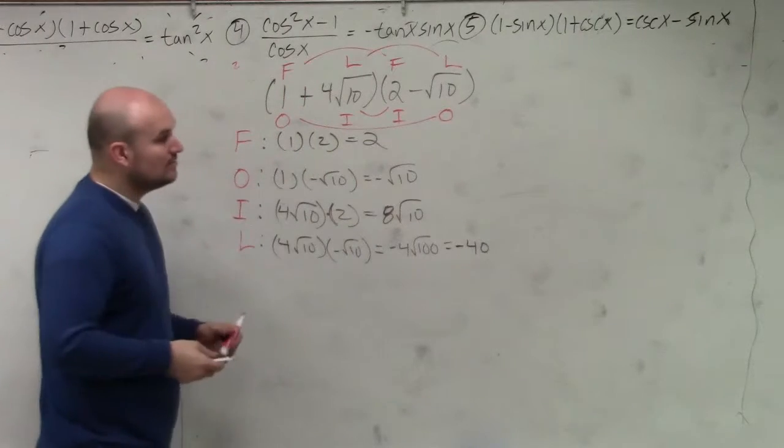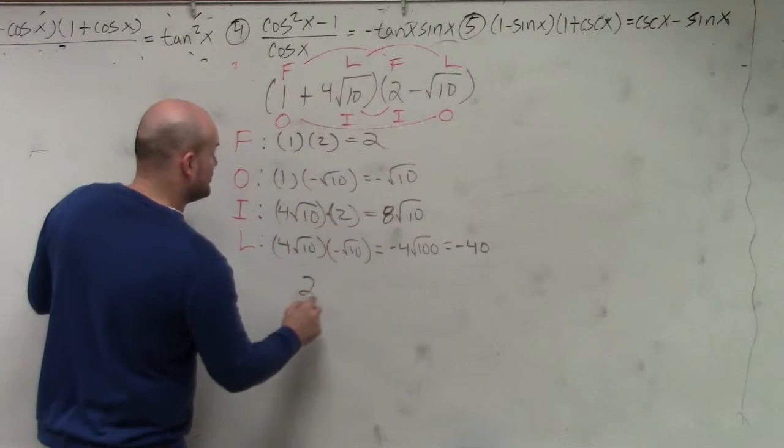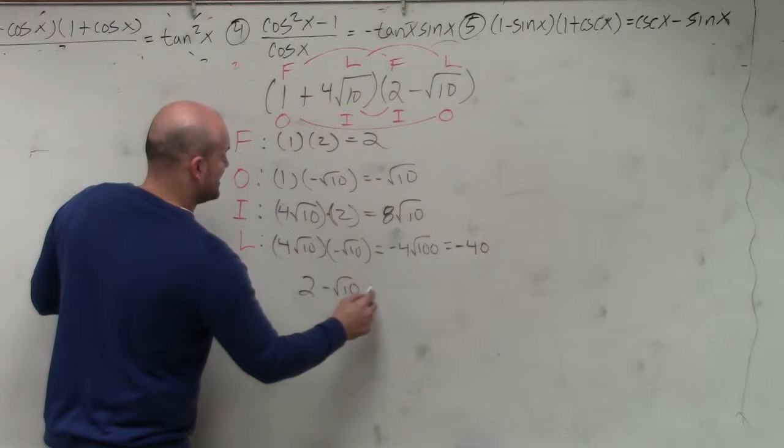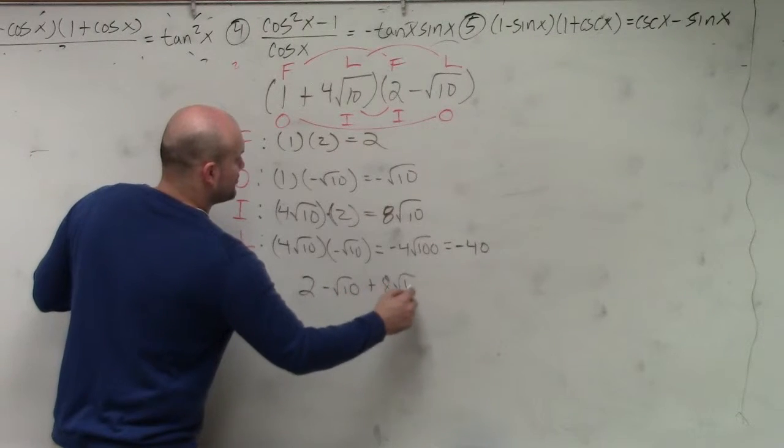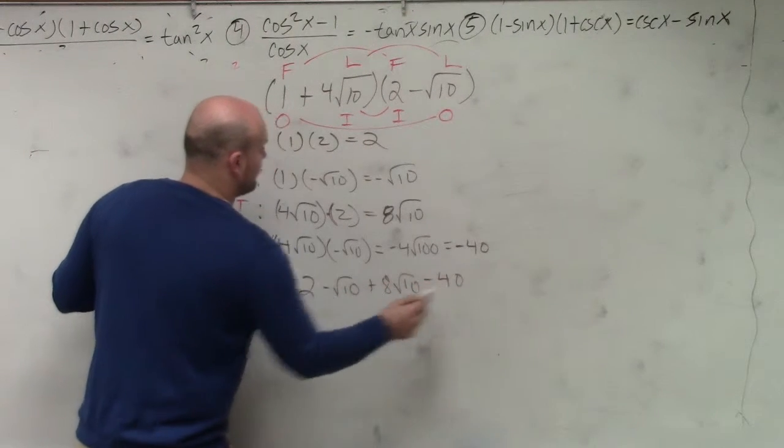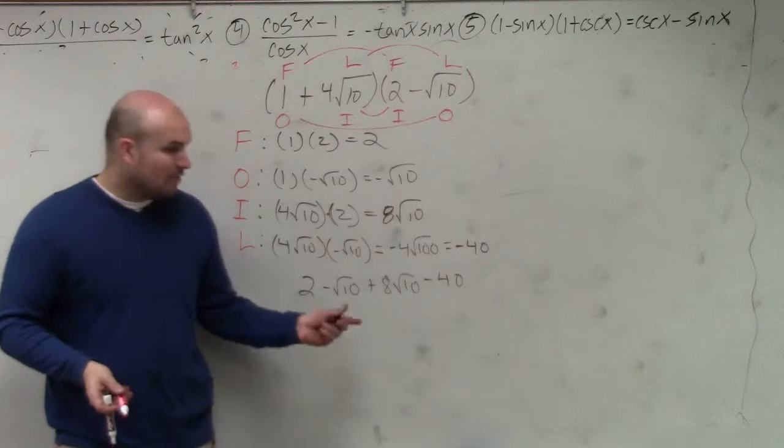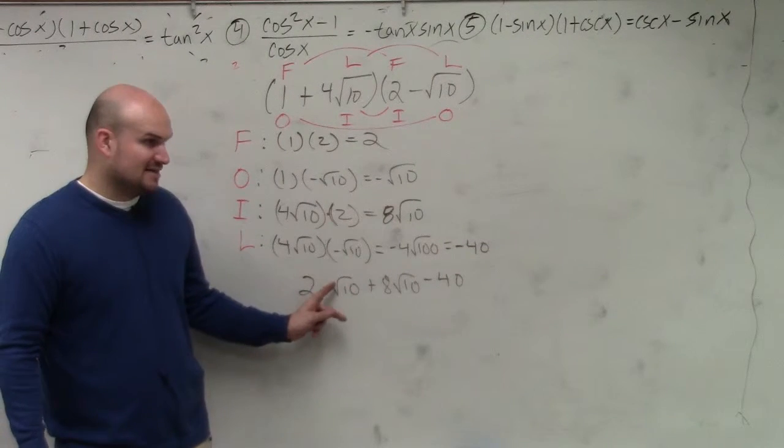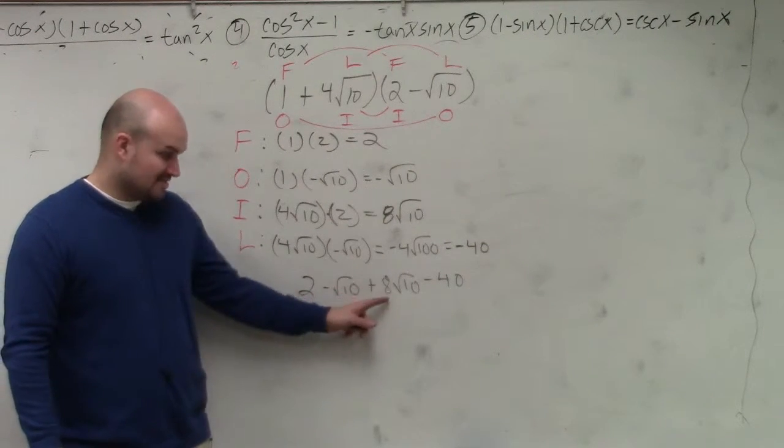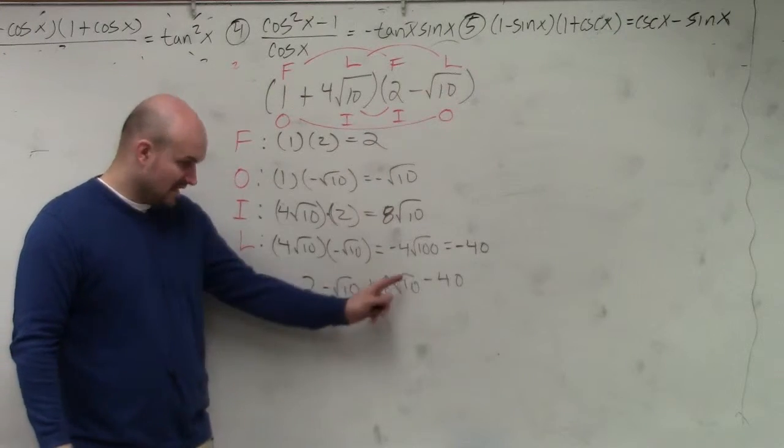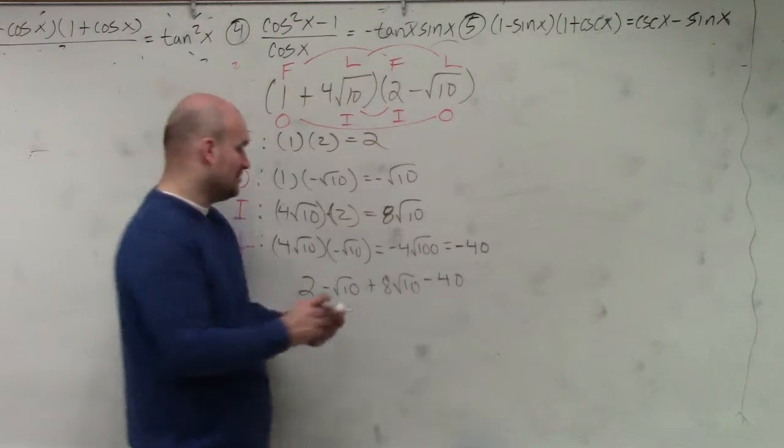So now, I'm going to add all of these terms up. So I have 2 minus square root of 10 plus 8 square root of 10 minus 40. Now, are my radicals exactly the same index? Yes. Are they exactly the same radicand? Yes. So therefore, I can just treat them like a variable.